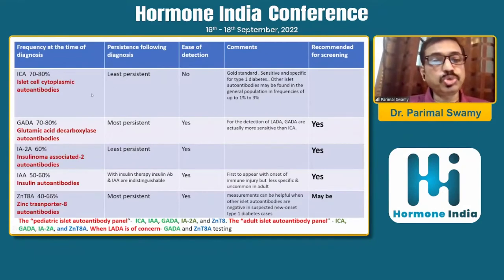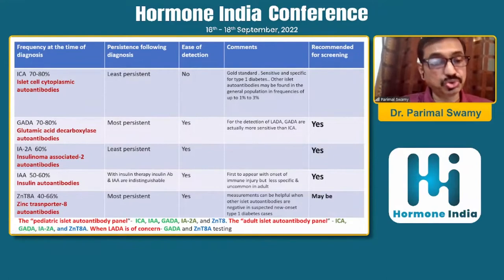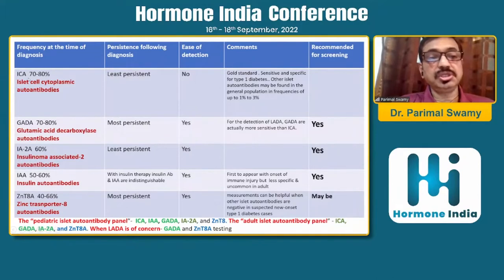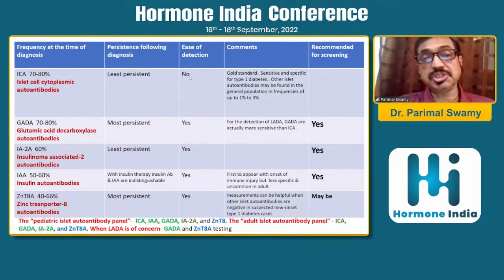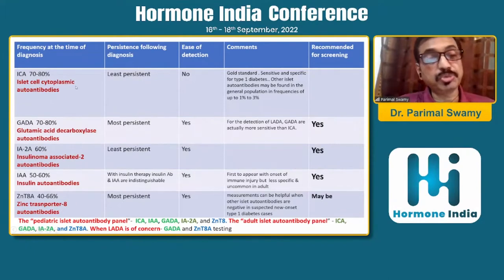This is one of the most important slides. It shows the frequency of autoantibodies at the time of — or even before — diagnosis, since in most children destined to develop type 1 diabetes, these autoantibodies will be present before stage 3 or even stage 2. These antibodies remain a cost-effective and easy method to predict type 1 diabetes. The islet cell cytoplasmic autoantibody (ICA) is present in 70–80% at diagnosis, least persistent, the assay is difficult, but it is the gold standard — most sensitive and specific for type 1 diabetes.